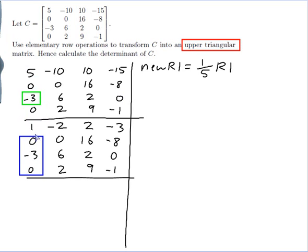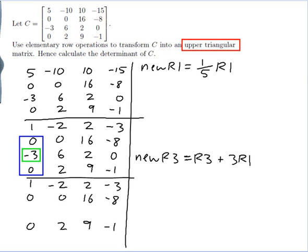I want zeros in all these positions, and in particular a zero here. I can do that by doing row three plus three times row one. So my new row three is row three plus three of row one: -3 + 3(1) = 0, 6 + 3(-2) = 0, 2 + 3(2) = 8, and 0 + 3(-3) = -9. So I have zeros in the positions I want in this column.